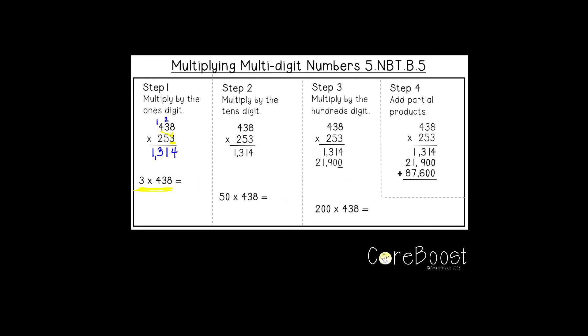That's step one. You've multiplied your ones digit by 438, and the answer is 1314.